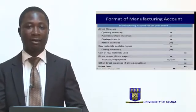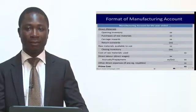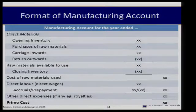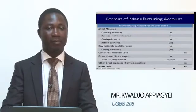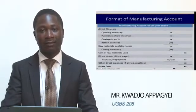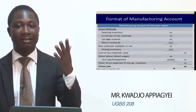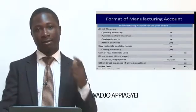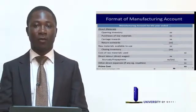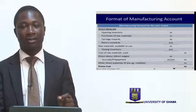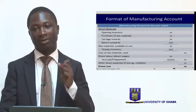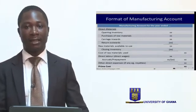Preparing a manufacturing account basically follows a certain logic. The logic is to first determine the direct costs — that is, the prime costs of the organization — which involves the direct material consumed, direct labor used, and direct expense incurred within a particular period for producing that product.